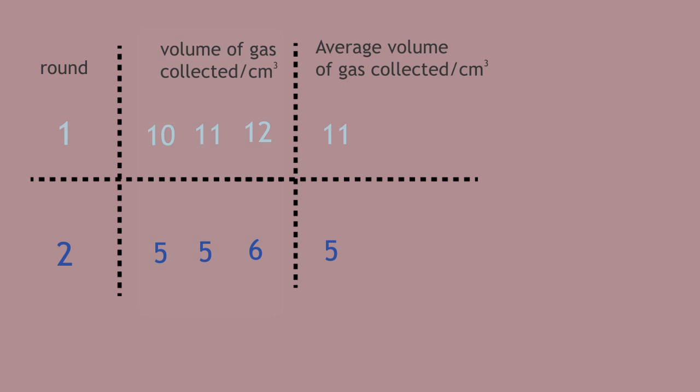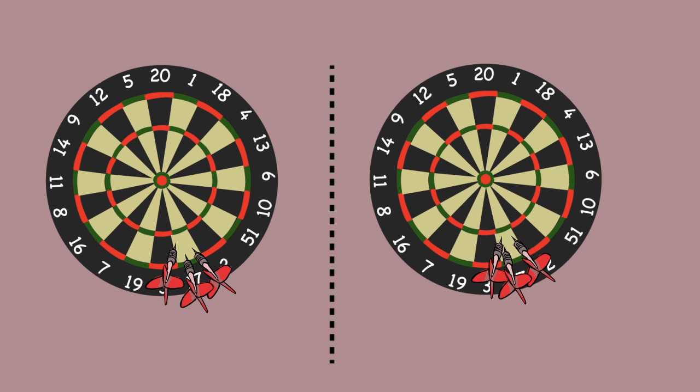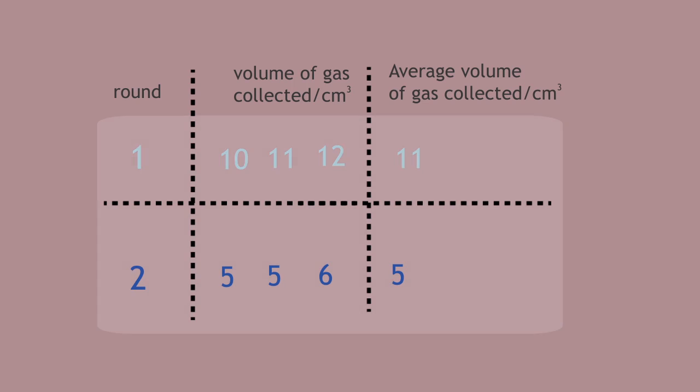Your second set of measurements for the volume of gas collected are no longer accurate as well. You'd hope to get the same set of results if you did everything the same way twice. However, these results are precise. All of your gas volumes are similar to one another and the average.